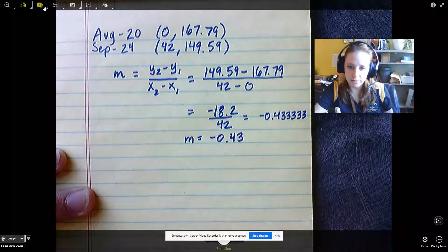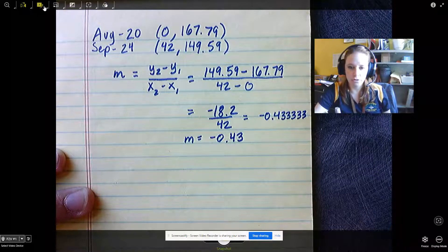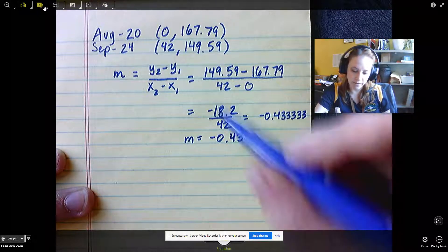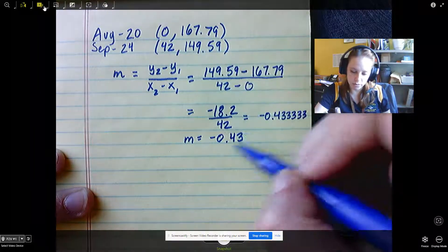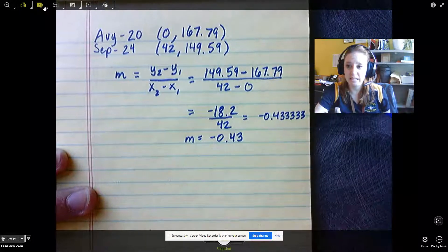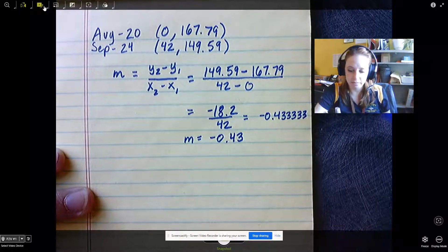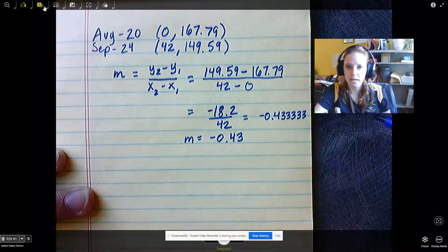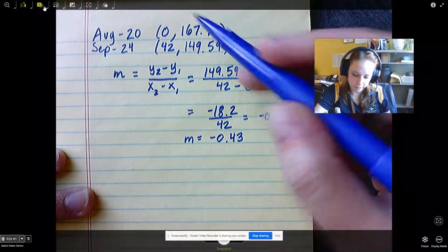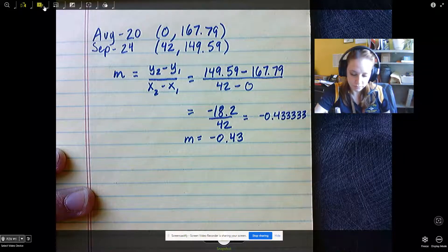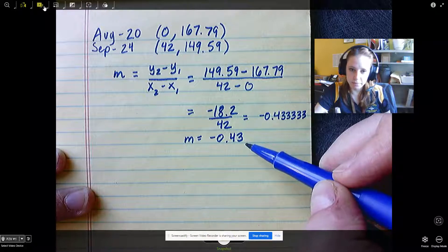That represents that every day it's losing about 43 cents. So it's declining by 43 cents in between those two dates. This is the slope.